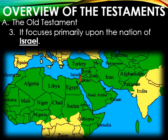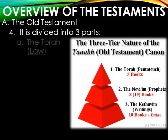The Old Testament focuses primarily upon the nation of Israel — that little red spot on the map — a very small but extremely significant part of both history and even today. The Old Testament is divided into three parts: the first is called the Torah, which is Hebrew for law. Those first five books — Genesis, Exodus, Leviticus, Numbers, and Deuteronomy — are all part of the Pentateuch, known as the law.